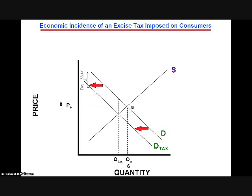Let's say the level of output is reduced from 6 to 4. This also creates a new effective price point for us to consider: the effective price confronted by consumers, indicated here as P subscript C. We also observe the effective price confronted by suppliers, denoted as P subscript S. Notice that the difference between P subscript C and P subscript S is the amount of the tax — in our hypothetical example, $3.